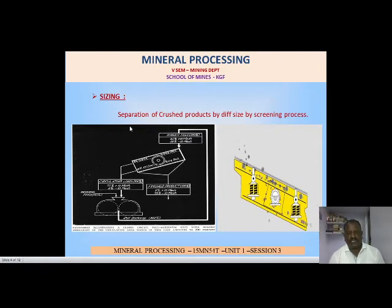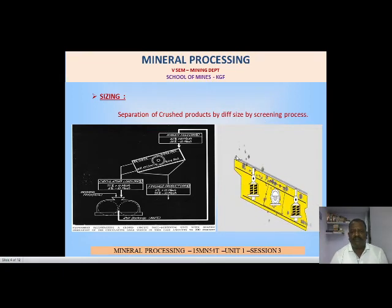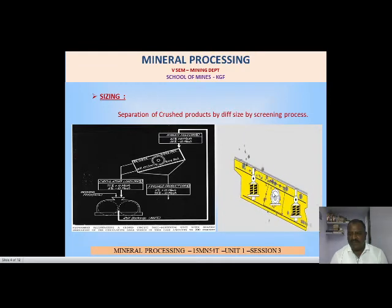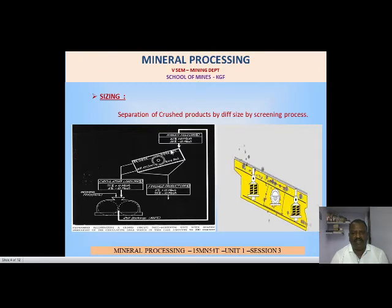Next we see sizing. Sizing is a separation of crushed products by different sizes using a screening process. The crushed material is passed through a vibrating screen, where the screen plates are arranged such that plus-size material goes on top and minus-size material comes down. In a double-decked screen, plus 25 mm size material goes on top and minus 25 mm size comes down.